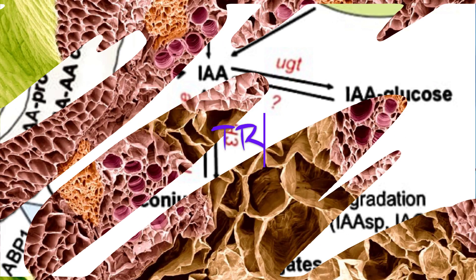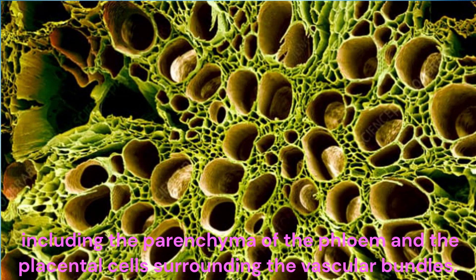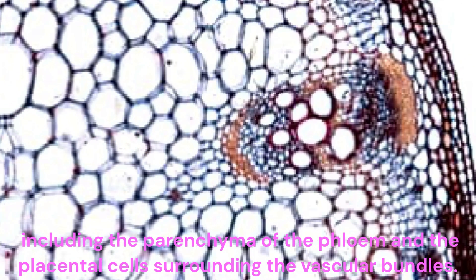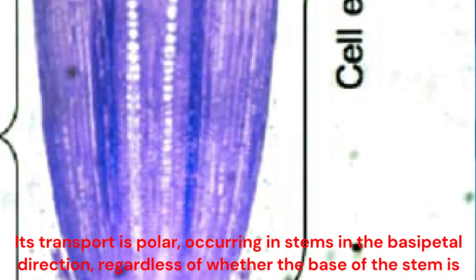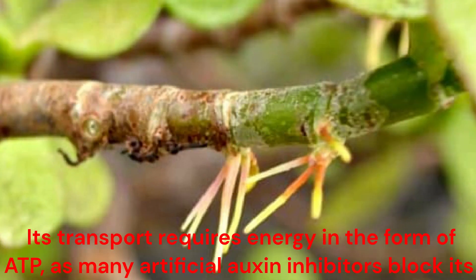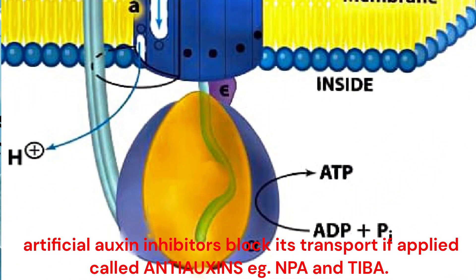Transport: Auxin is not typically translocated through the phloem or xylem, but through the parenchyma of the phloem and the parenchymal cells surrounding the vascular bundles. Its transport is polar, occurring in stems in the basipetal direction, regardless of whether the base of the stem is normally down, even if the apex is upside down. Its transport requires energy in the form of ATP, as many artificial auxin inhibitors — called anti-auxins, for example NPA and TIBA — block its transport.